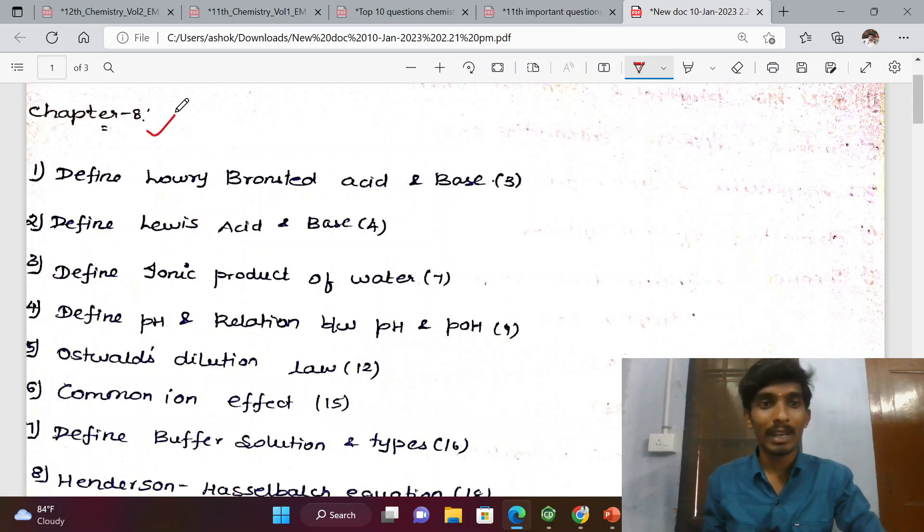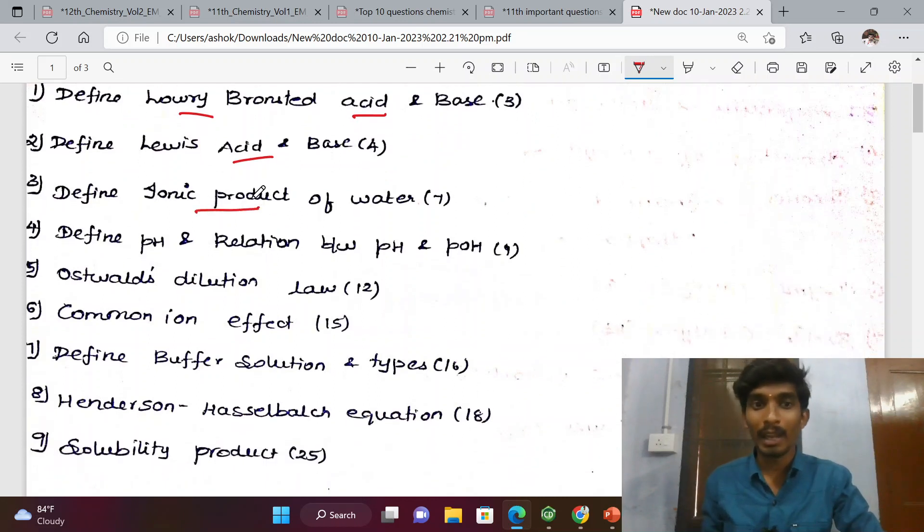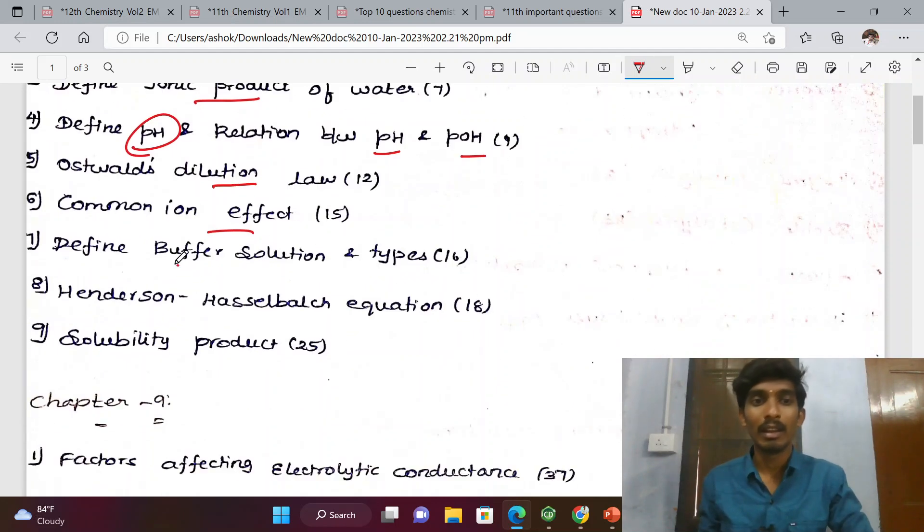Chapter 8, Ionic Equilibrium: Lowry-Bronsted theory of acid and base, Lewis acid and base, ionic product of water (definition), define pH, relation between pH and pOH, Ostwald dilution law, common ion effect, buffer solution and types, Henderson-Hasselbalch equation, and solubility product.